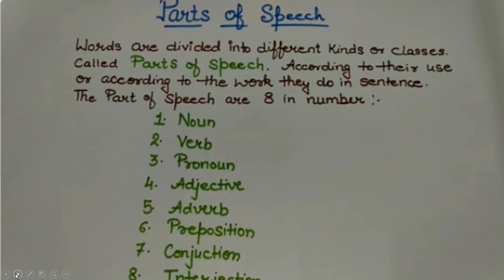Words are divided into different kinds or classes — this is called parts of speech — according to their use and the work they do in a sentence. The parts of speech are eight in number: noun, pronoun, verb, adjective, adverb, preposition, conjunction, and interjection.